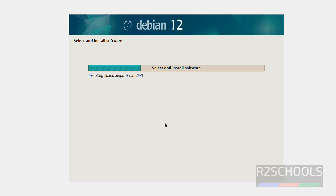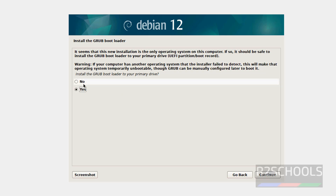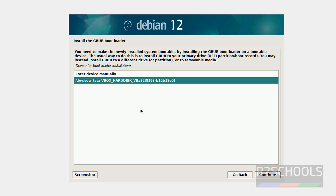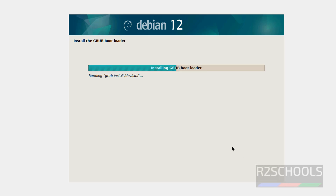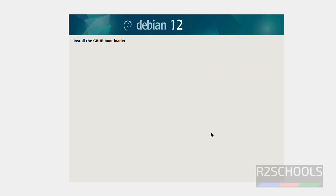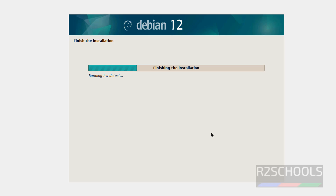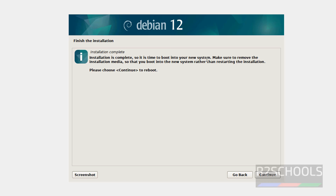Continue. Select Yes to install the GRUB bootloader and click on Continue. Select the device and click on Continue. The installation has been completed. Make sure to remove the installation media so that you boot into the new system rather than restarting the installation.